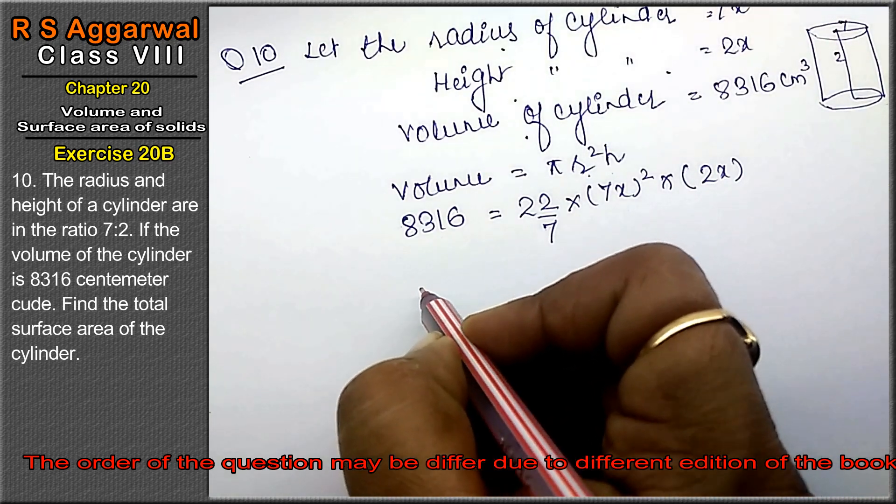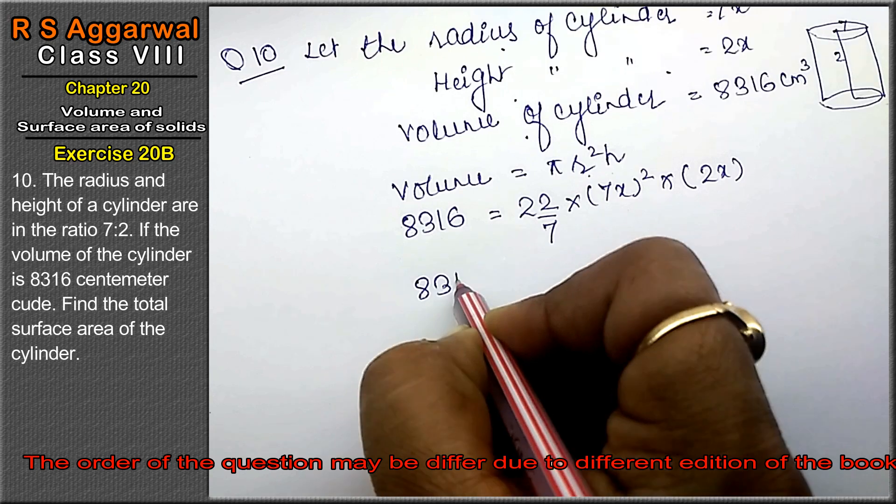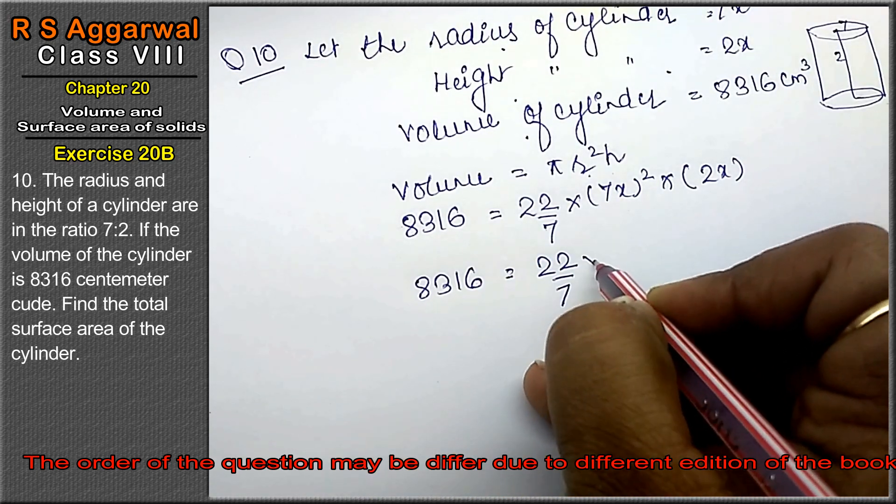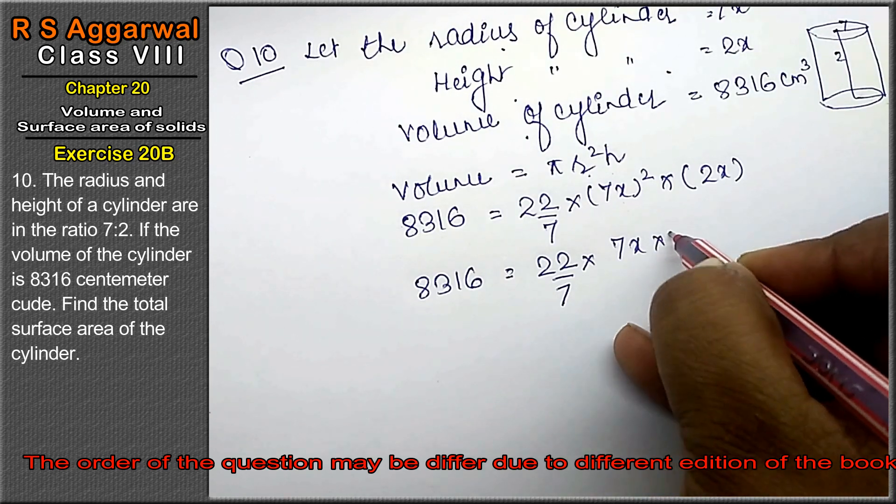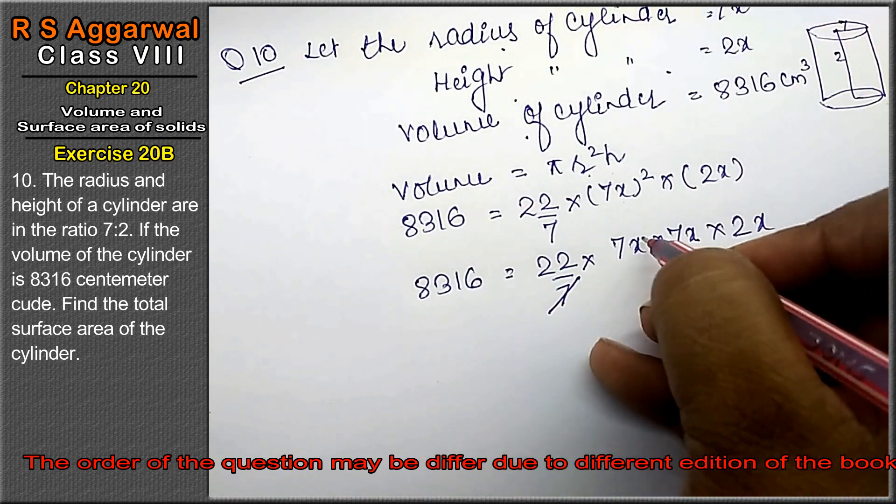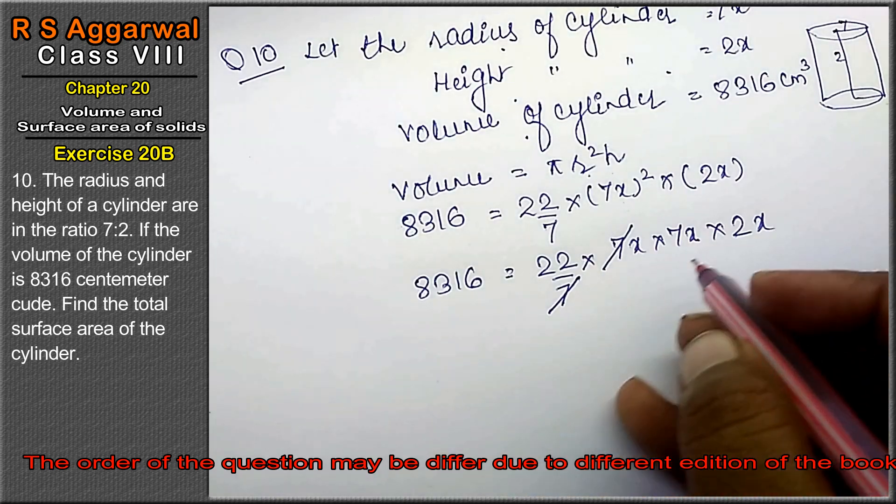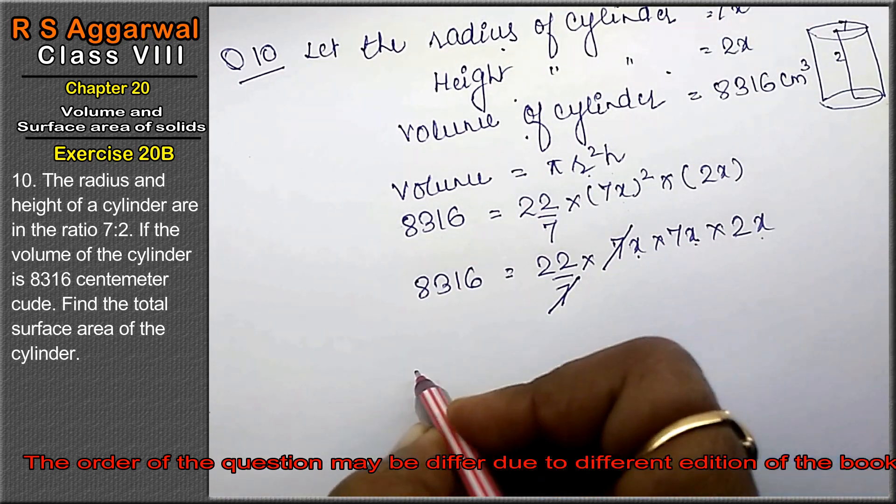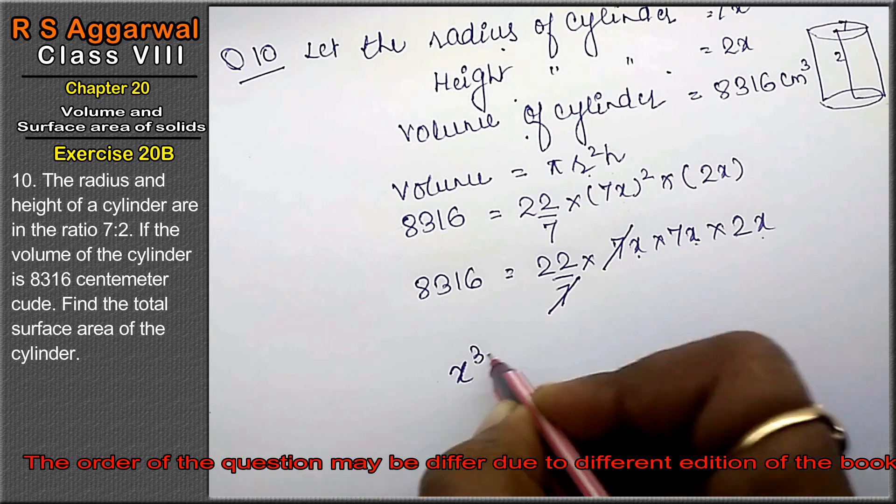Now see, what happened? 8316 equals to 22 upon 7, 7x into 7x into 2x. Now 7-7 cancelled. How many x have been? x into x into x, that means x cube, right friends?